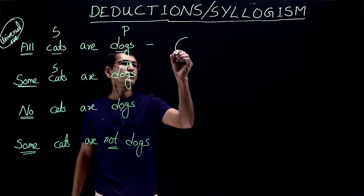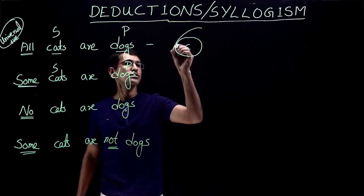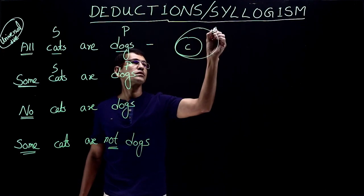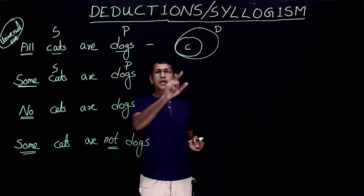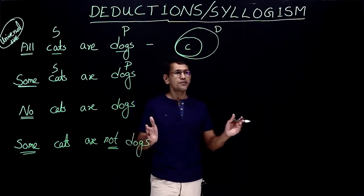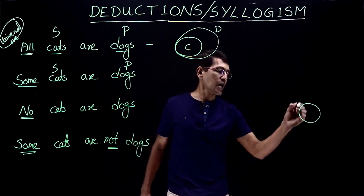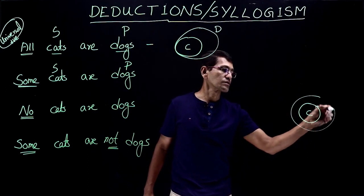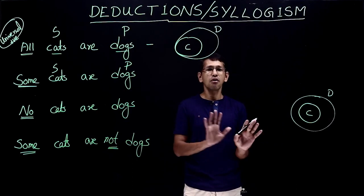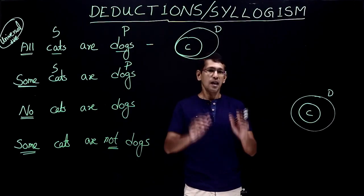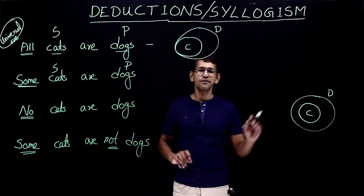How about this diagram here — cats inside dogs? Some of you may be thinking about a different diagram: cats and dogs as two overlapping circles. Is this diagram and that diagram logically the same or different? Well, physically they look slightly different. However, the question is: logically, are they the same or different? They are different.